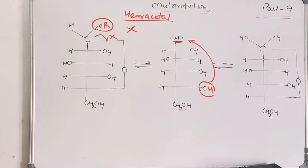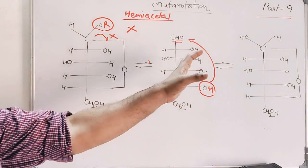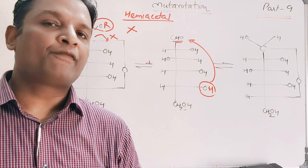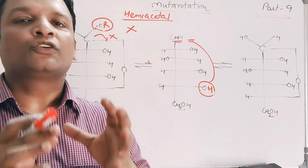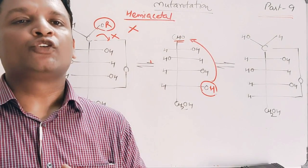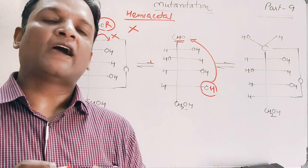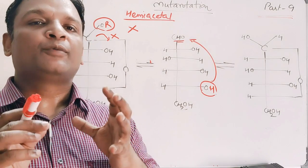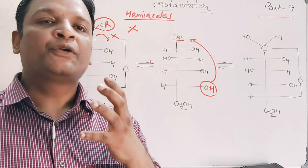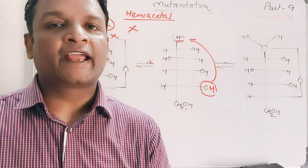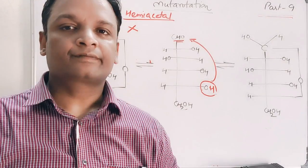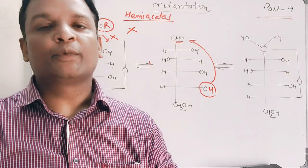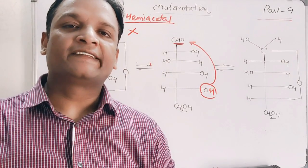Remember that all hemiacetals show mutarotation, but no acetal shows mutarotation. Mutarotation is a process observed only in hemiacetal compounds because they contain an OH which can be removed by a base. In summary, mutarotation is the change in specific rotation with passage of time until a constant value is observed. For glucose, this constant value is 52.7°, with 36% alpha-D-glucose and 64% beta-D-glucose at equilibrium. Mutarotation is catalyzed by acid and base and is only observed in hemiacetals.